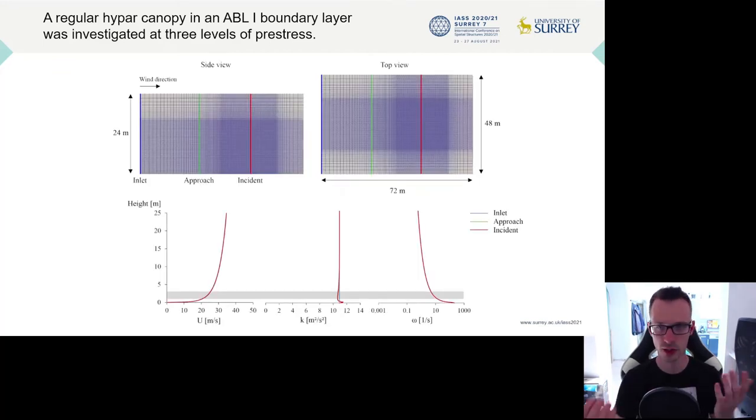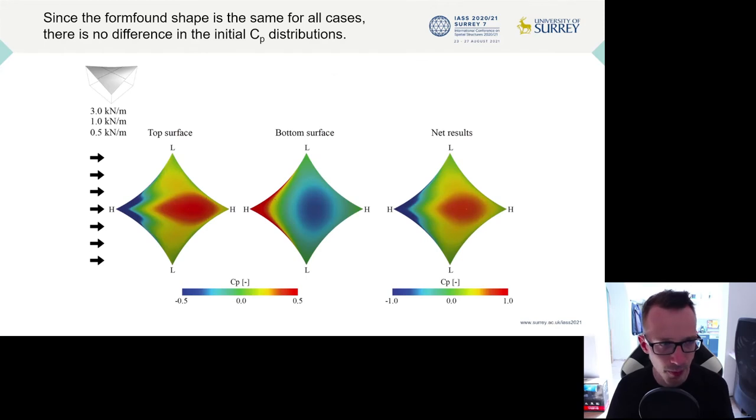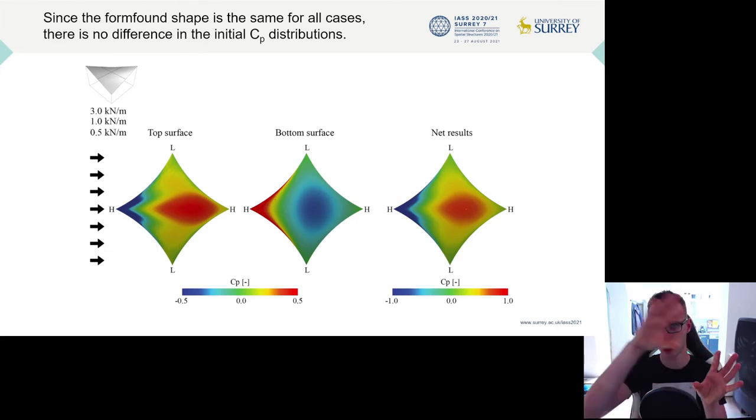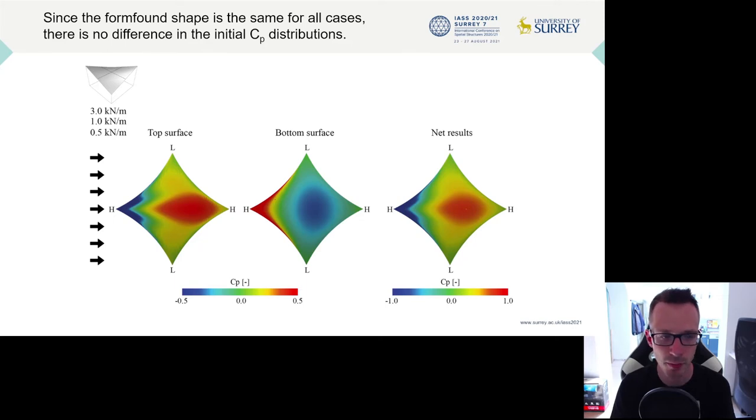As boundary conditions for the wind tunnel, we chose an ABL1 boundary layer, which was initially investigated in an empty domain to make sure that it was consistent throughout the domain. Of course, because the initial geometry, the form-found geometry, is the same for all three cases, the initial results are also the same. So this is just with one computational fluid dynamic simulation, and just the results of this pressure analysis.